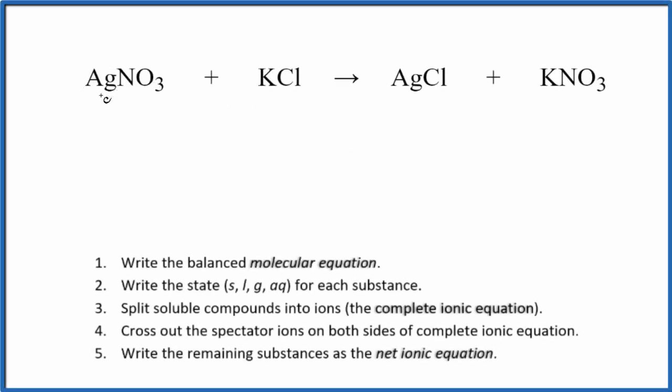To write the net ionic equation for AgNO3 plus KCl, that's silver nitrate plus potassium chloride, we'll use these rules here. So the first rule is to write the balanced molecular equation. This is the molecular equation, and it's already balanced, so we don't have to do anything for the first rule.